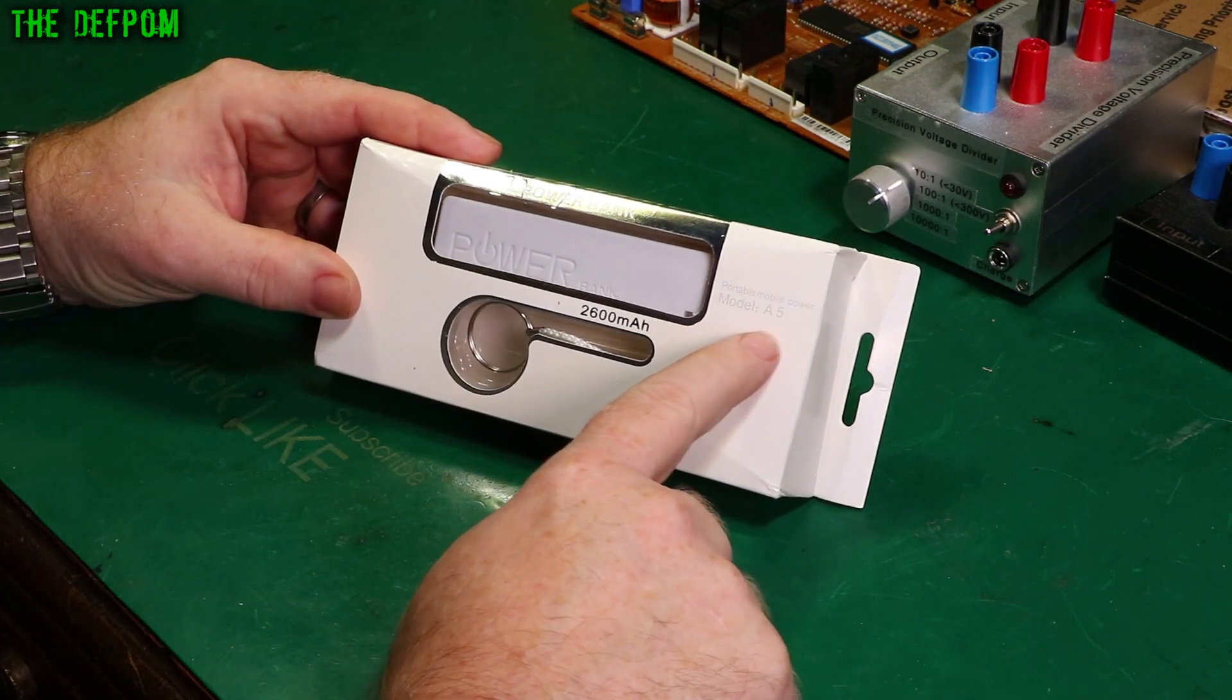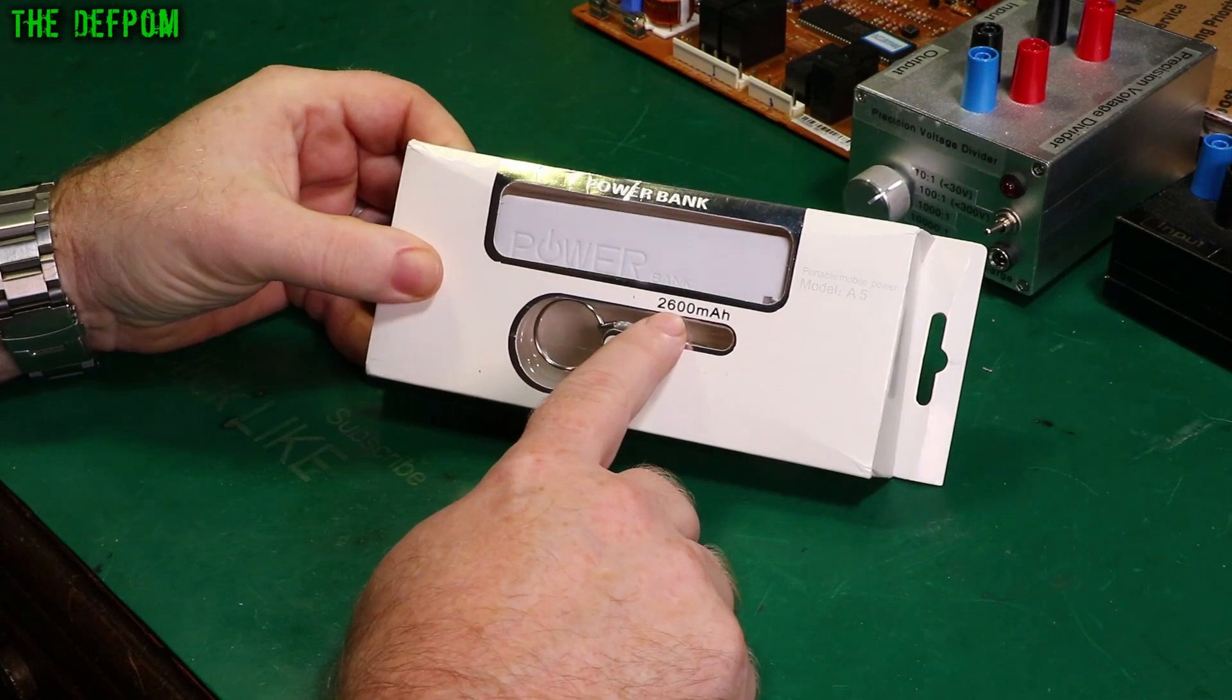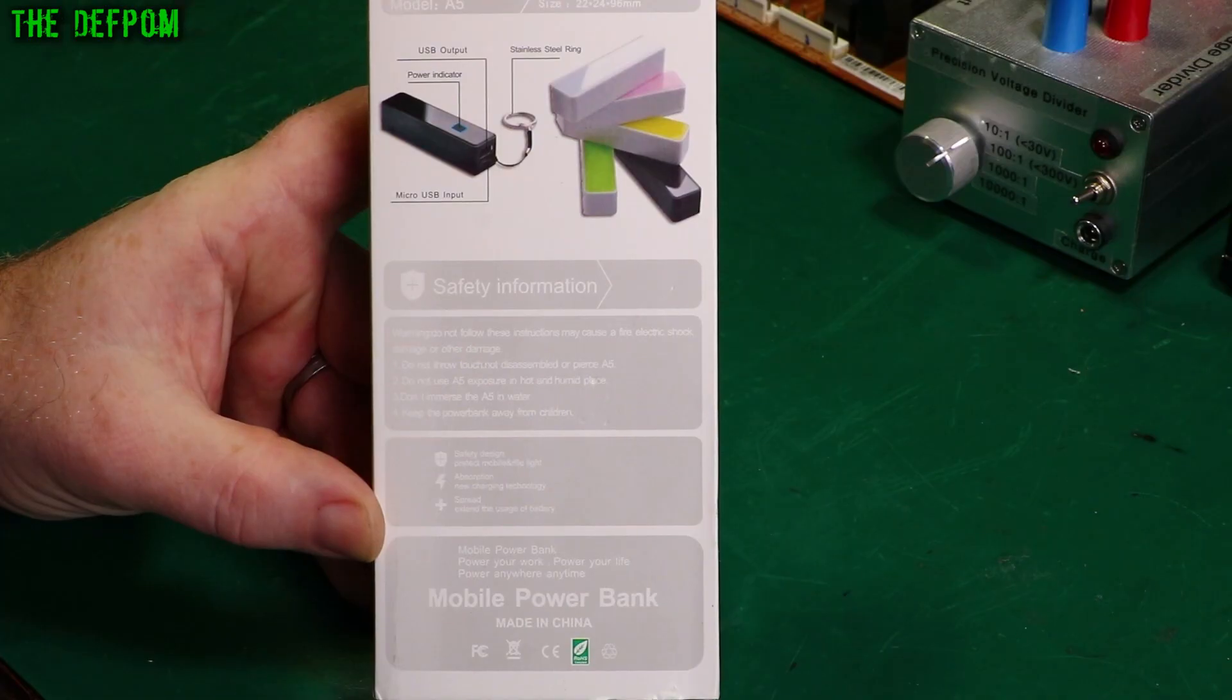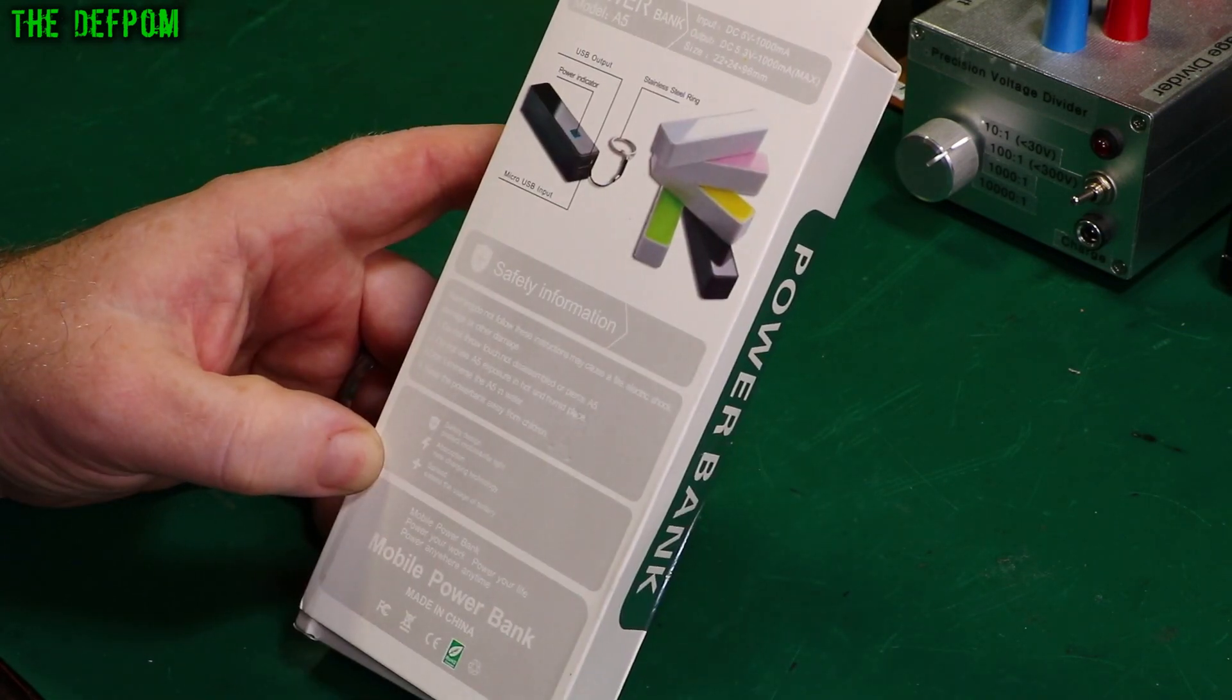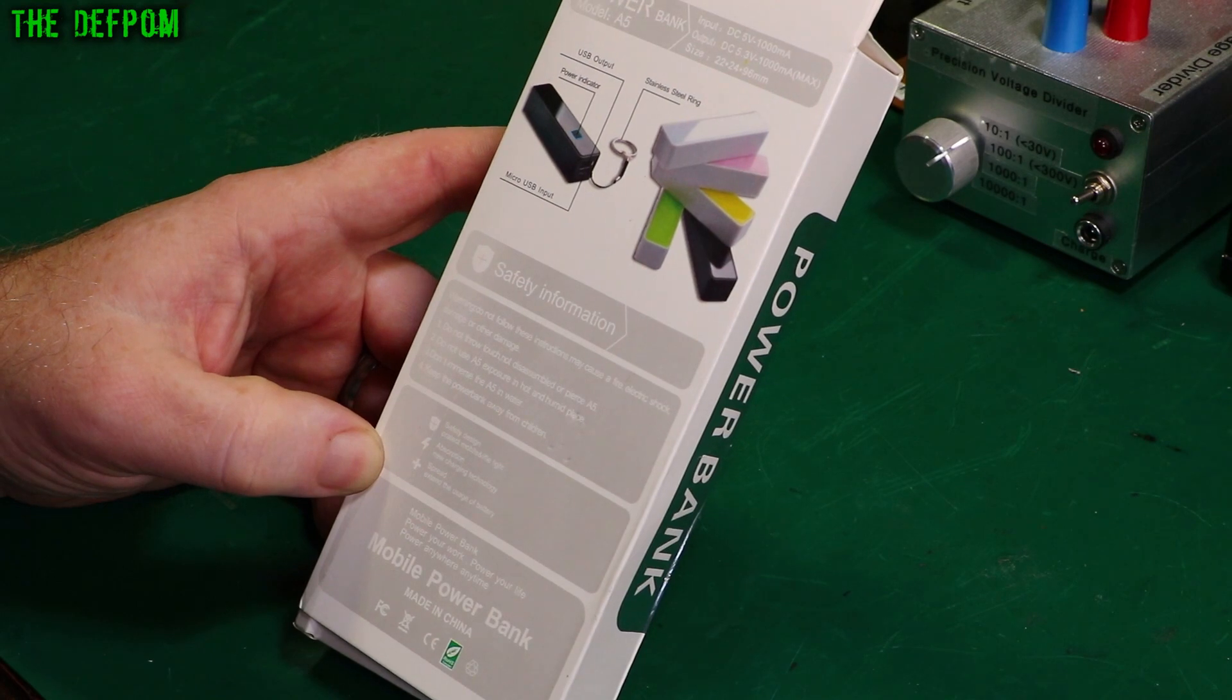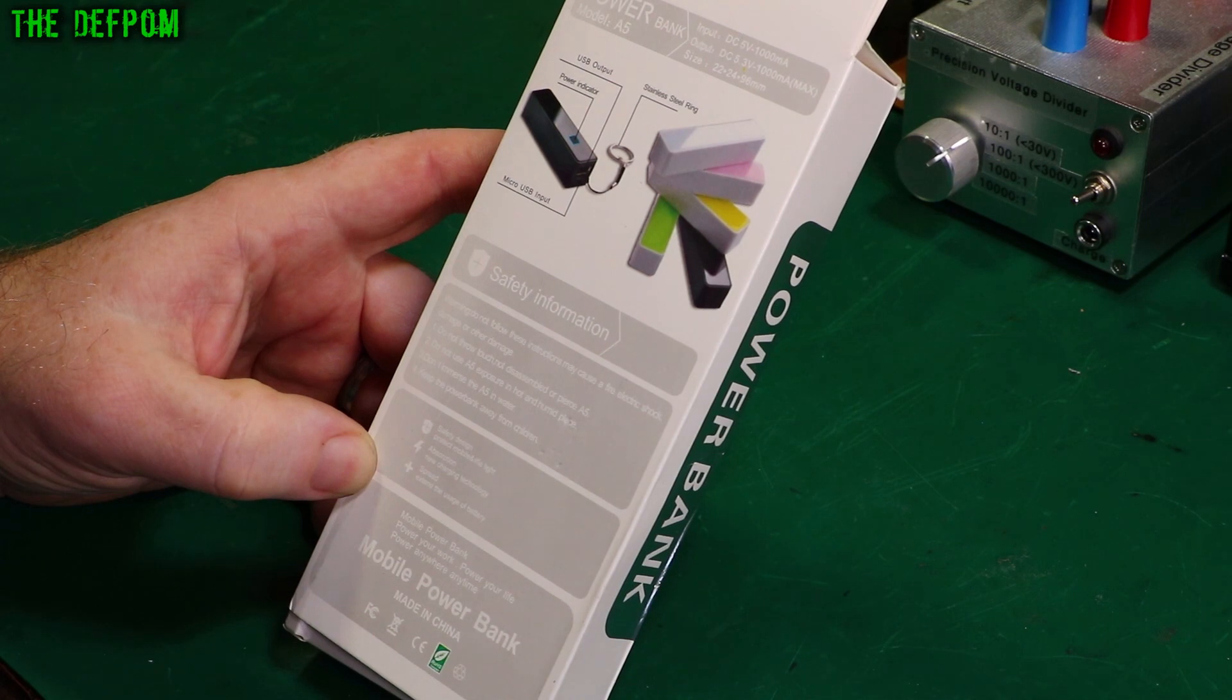So it's the model A5, no manufacturer on it, but it's supposed to be 2600mAh, we'll see about that. Made in China of course, all the best stuff made in China. Not much to see on the back, but it says output 1000mAh max, output DC 5.3V.